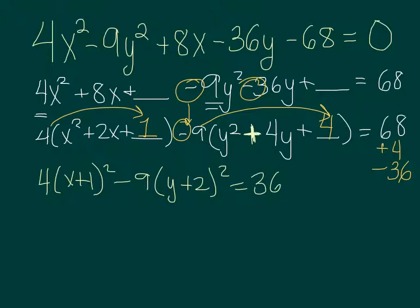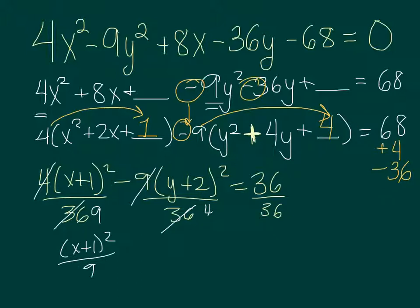Now remember, I'm not done. I want it to equal 1, so I'm going to divide everything by 36 and then simplify. So this is going to change to a 9, and then here we're going to change this one to a 4. So we have x plus 1 squared over 9 minus y plus 2 squared over 4, all equals 1. Hope this helped.